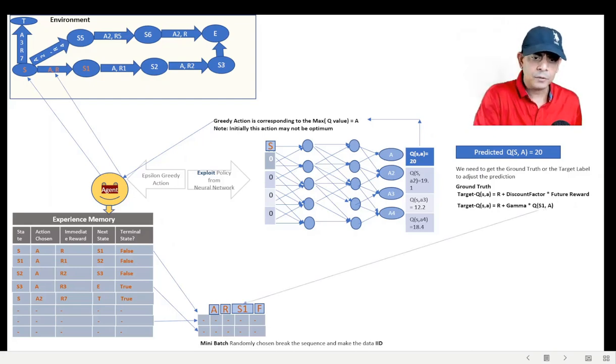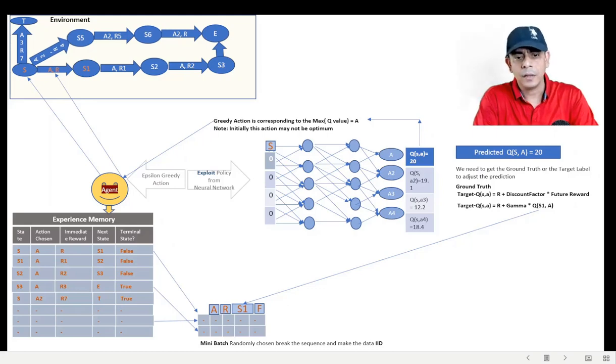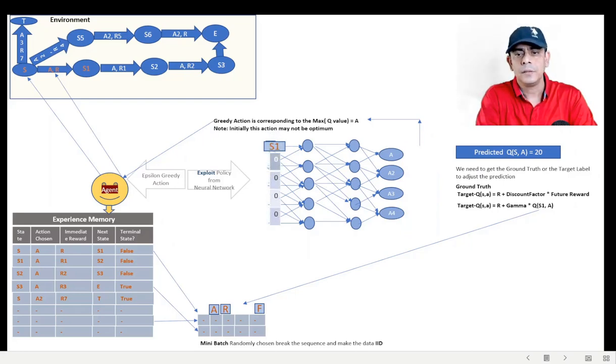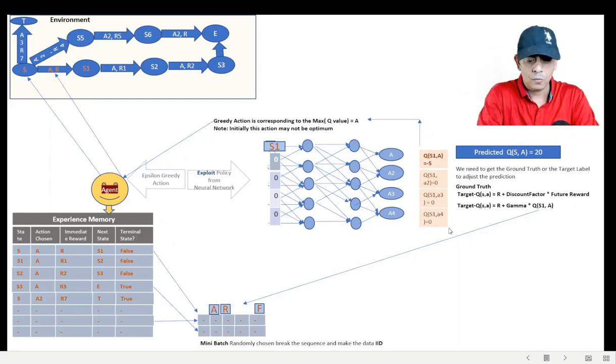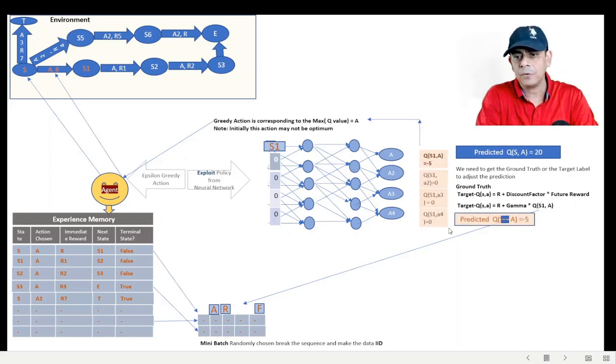Now that can be calculated because we have S1 in our experience memory or in the batch. One of the tuples, if we take it, has S and also has R. So all we have to do is pass the S again to the network and then ask it to give me the target value for this, which is Q(S1,A). Once you get it, simply apply the formula.